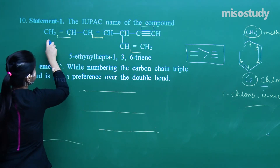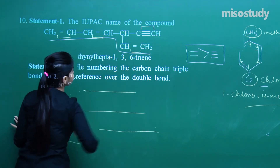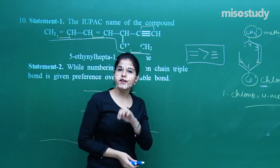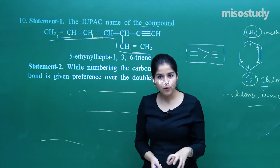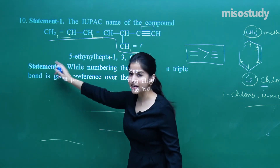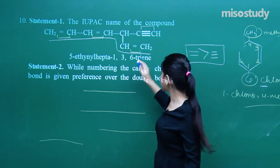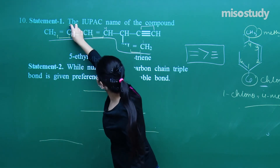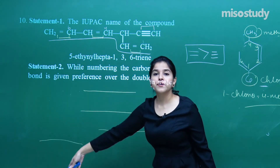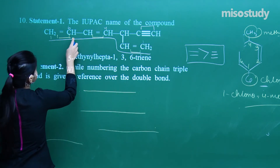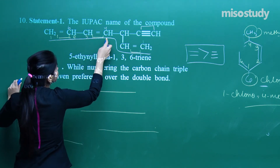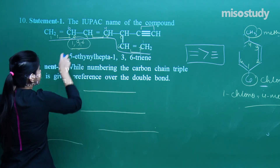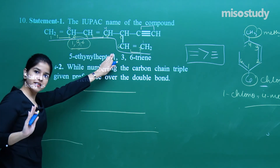That means I need to have this chain as my word root. Now I need to assign the lowest possible number to the double bonds. Checking from one side: 1, 2, 3, 4 — giving positions 1, 4, 6. Numbering from the other side: 1, 2, 3, 4, 5, 6, 7 — giving positions 1, 3, 6. This set, 1, 3, 6, is the lowest possible. So I will be numbering from that side — that is the correct numbering.